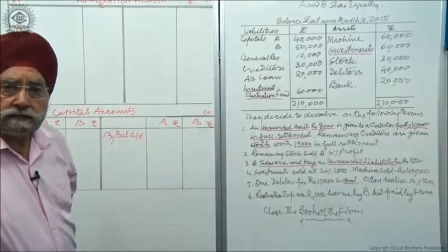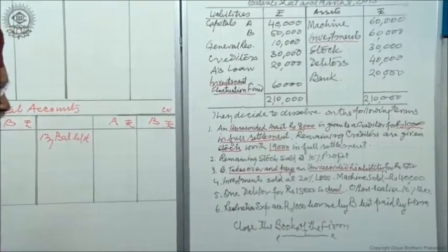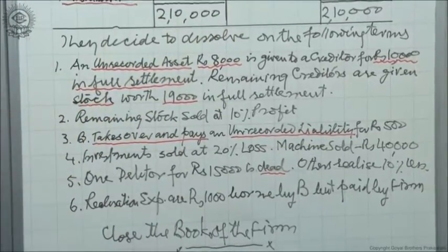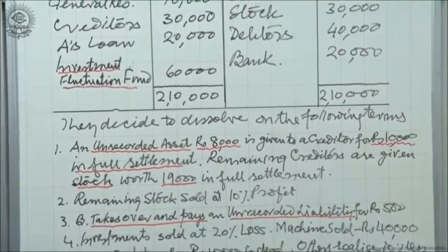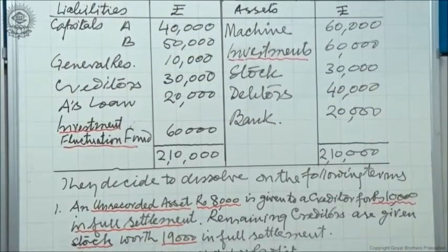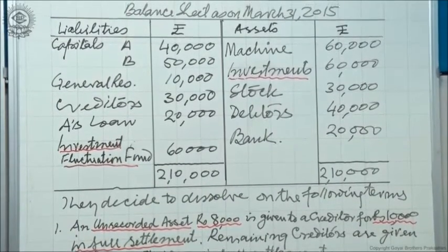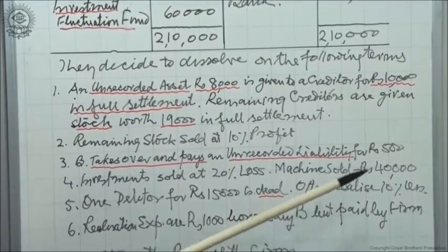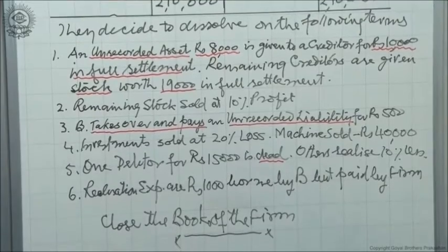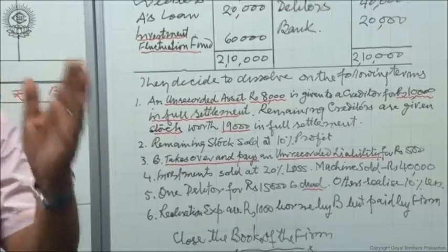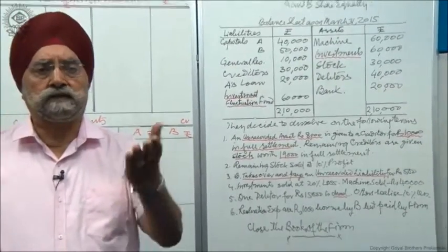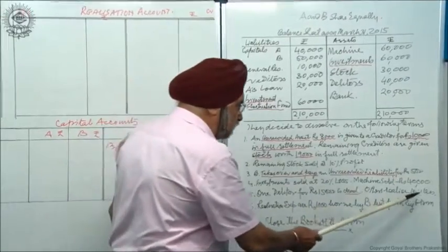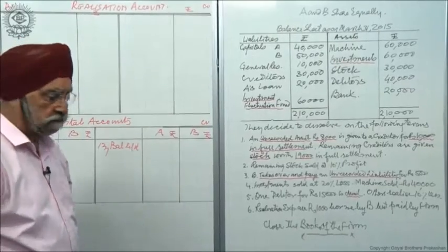One debtor for Rs. 15,000 is dead, so that amount is irrecoverable. Total debtors were Rs. 40,000; with Rs. 15,000 bad, the remaining debtors are Rs. 25,000. The remaining debtors are realized at 10% less: 10% of Rs. 25,000 is Rs. 2,500, so we receive Rs. 22,500 from them. That covers all the debtor adjustments.